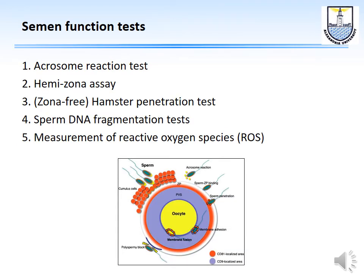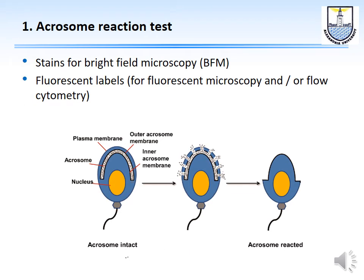Descriptive tests have limitations, so sperm function tests were developed. Fertilization involves many steps: the acrosome reaction releasing acrosin and hyaluronidase; fusion with the zona pellucida; penetration of the oolema; and fusion with the oocyte's DNA. Different function tests assess each of these steps.